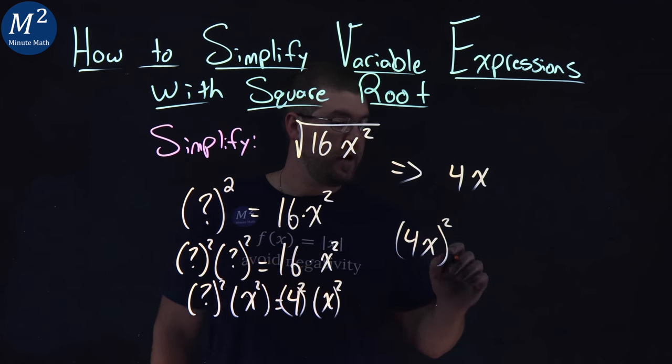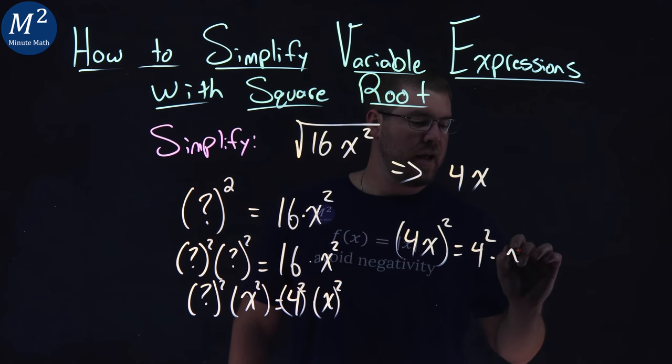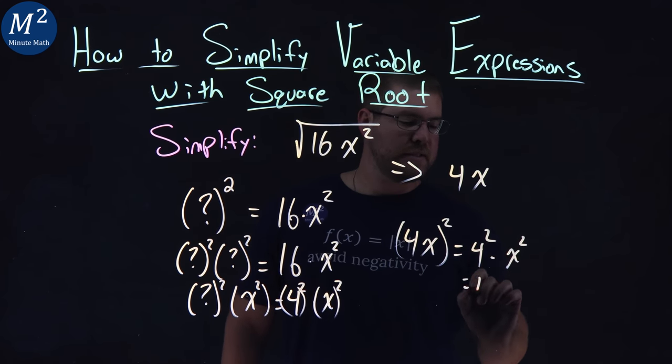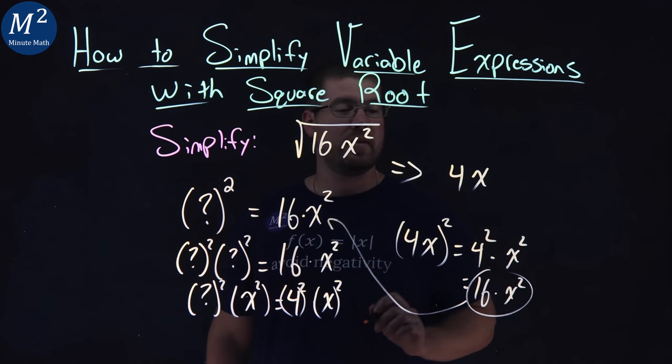Well, 4x all squared is, as you can see it, 4 squared times an x squared. 4 squared is 16, and x squared is x squared. And we got what was on the inside right there.